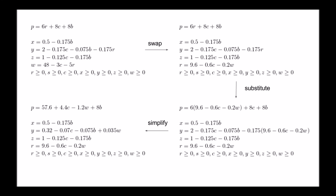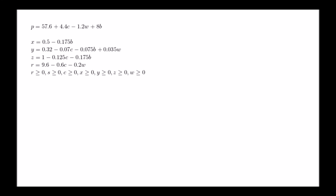Next we will select b as the pivot. In equation x, b is at most 20 over 7. In equation y, b is at most 80 over 3. And in equation z, b is at most 40 over 7. Since 20 over 7 is the smallest, that is our lower bound, and we will swap b for x as we did before.